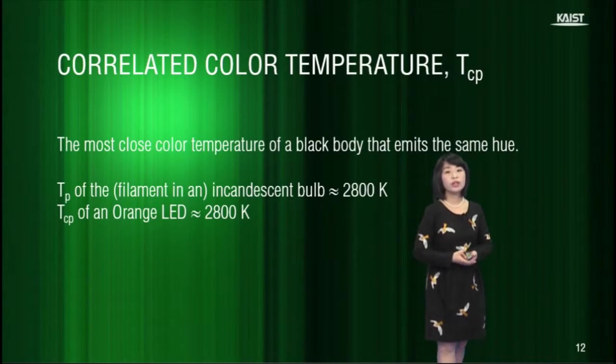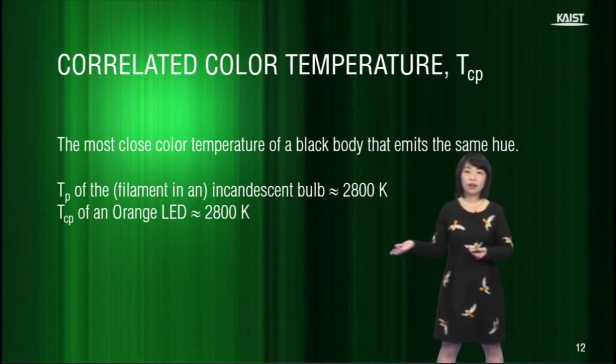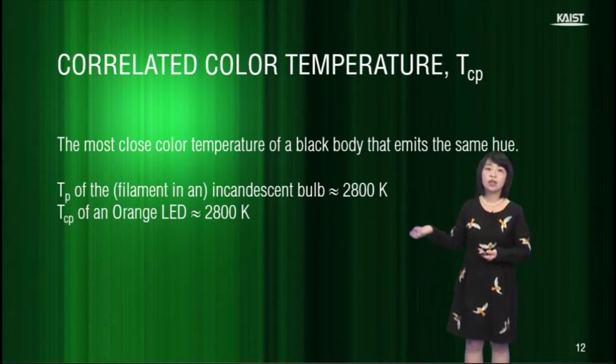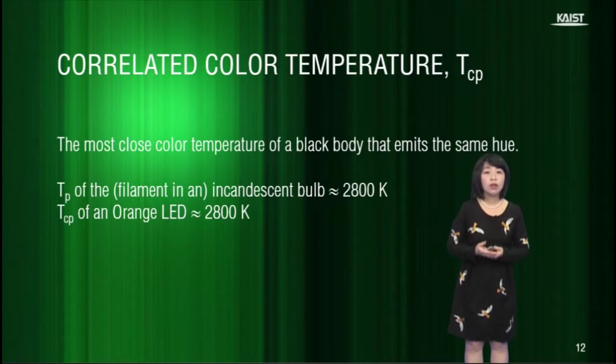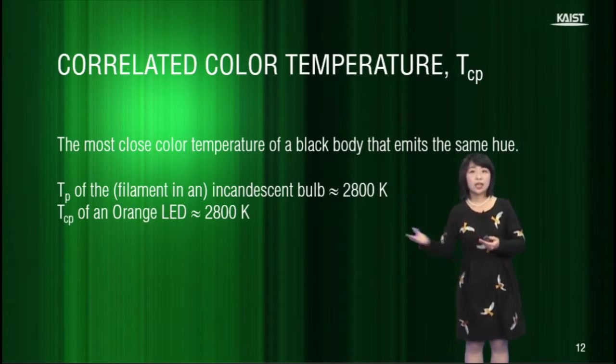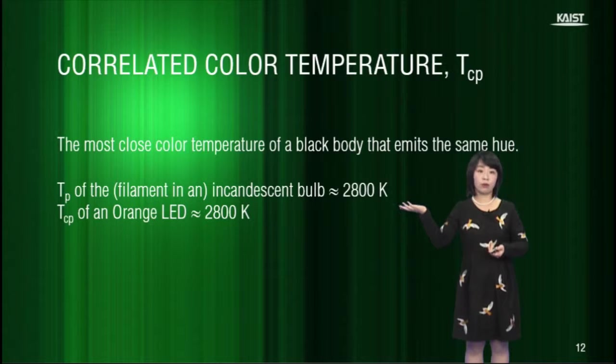So, we need to know about the correlated color temperature. The correlated color temperature indicates the closest color temperature of a black body that emits the same hue. For example, the correlated color temperature of an orange LED is roughly 2800 Kelvin, because the color looks very similar to the color of filament in the incandescent bulb.